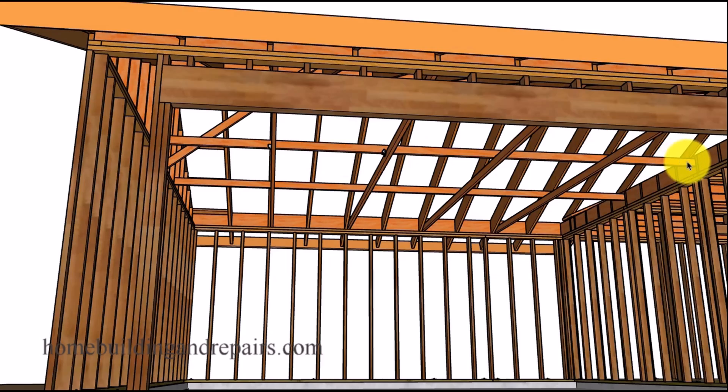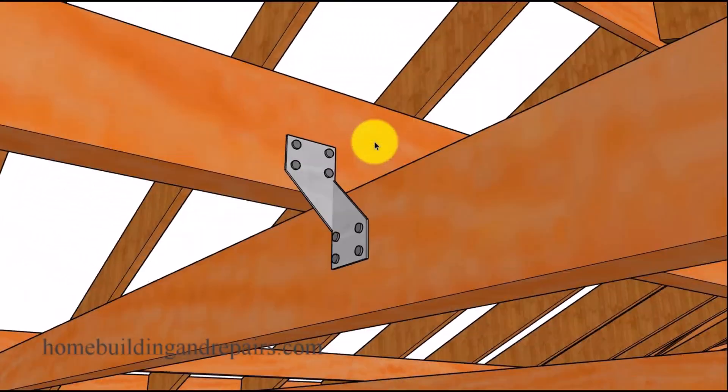If you have a 20 foot by 20 foot garage, 20 foot long 2x4 in this direction, 20 foot long 2x4 in this direction, there's a good chance that in the middle of the garage it's going to be sagging, especially if you store stuff up there also.